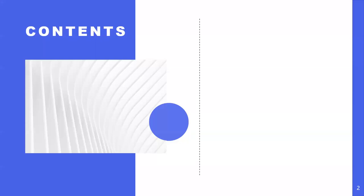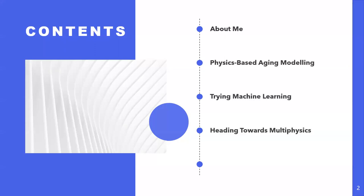There are five parts in today's session. Firstly, I'm going to talk a little about myself. Then I will break my whole research into three major contributions, followed by Q&A if we have time. As you can see, physics-based aging modeling is really the core of my research. In the past few years I've also tested the waters of machine learning, given that it is a hot topic, and I will also talk about my current pursuit of multi-physical analysis and how it connects with the aging of construction materials and structures.